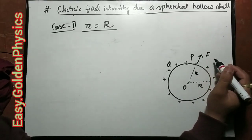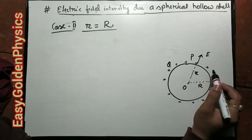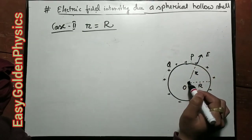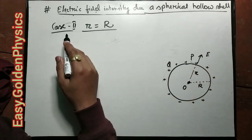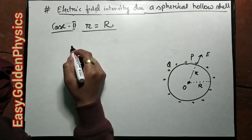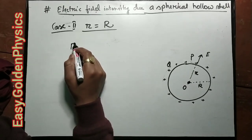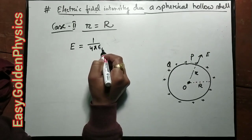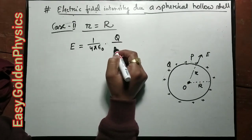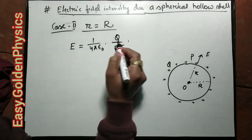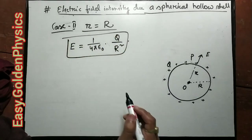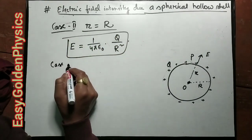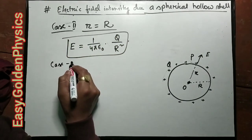Moving on: 1 over 4 pi epsilon naught, Q divided by capital R squared — this applies for the surface (r = R). This leads to Case 3: small r is less than capital R, where the point is inside the hollow shell.